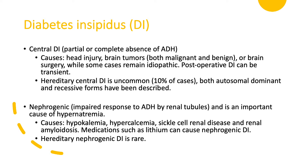Diabetes insipidus is an important category — not because it's very common, but because failure to recognize it is a big problem. DI can be central or nephrogenic. Central DI can be partial or complete. Central DI is related to the central nervous system: head injury, brain tumors, and brain surgery are big categories. Some cases are idiopathic, some are transient after brain surgery, and about 10% of cases are hereditary, being autosomal dominant or recessive — these you see in children.